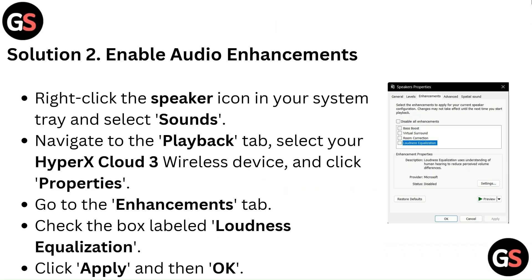Solution 2: Enable audio enhancements. Right-click the speaker icon in your system tray and select Sound. Navigate to the Playback tab, select your HyperX Cloud 3 wireless device, and click Properties. Go to the Enhancements tab, check the box labeled Loudness Equalization, then click Apply and OK.